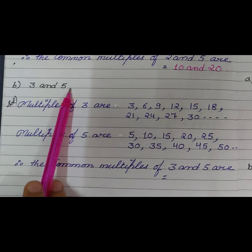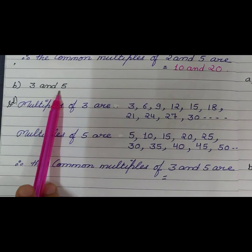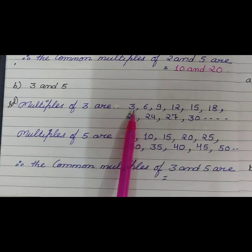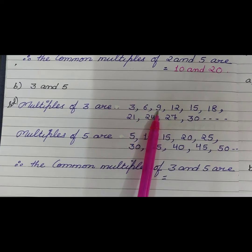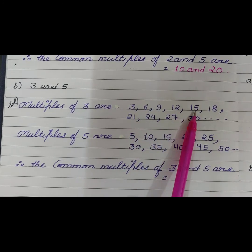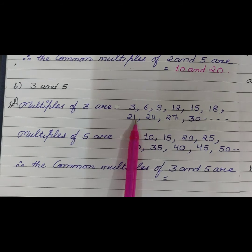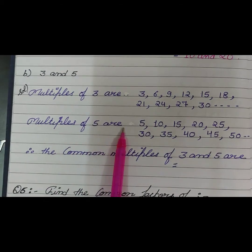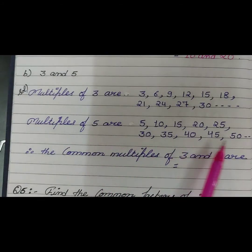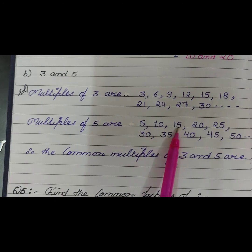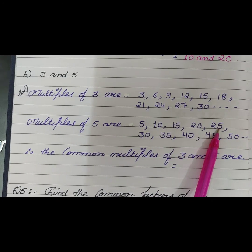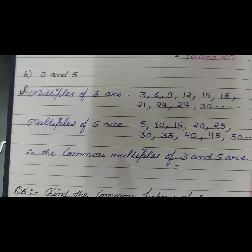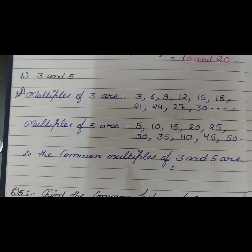Part B: 3 and 5. Now we have to find the common multiples of 3 and 5. Multiples of 3: 3, 6, 9, 12, 15, 18, 21, 24, 27, 30, and so on. Multiples of 5: 5, 10, 15, 20, 25, 30, and so on. Now we have to find the common multiples among them.